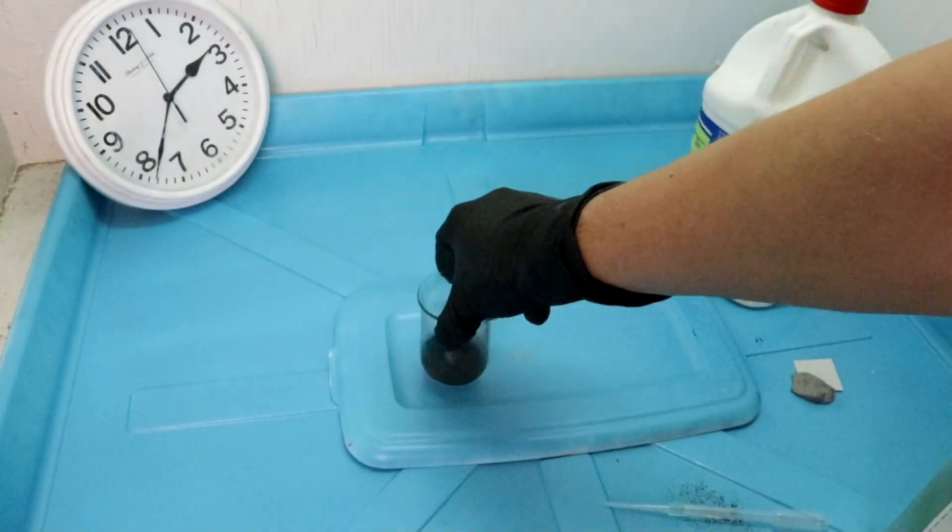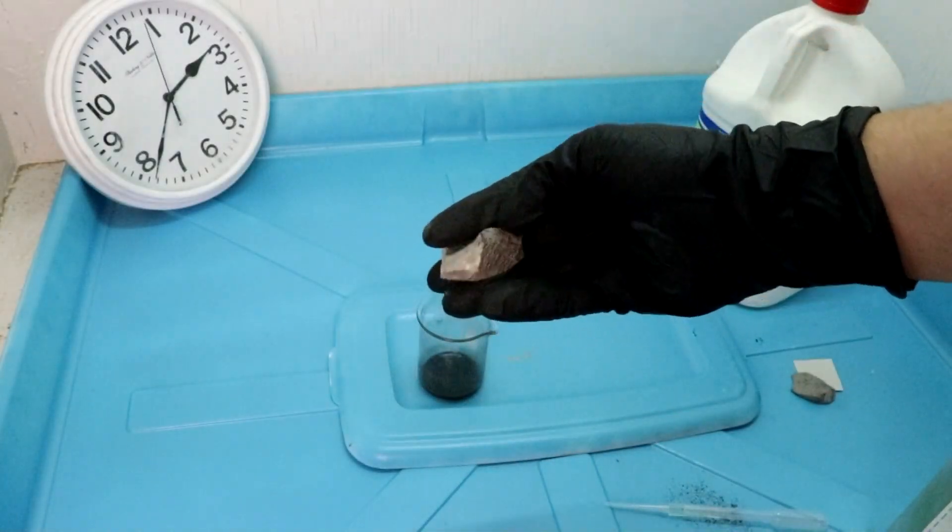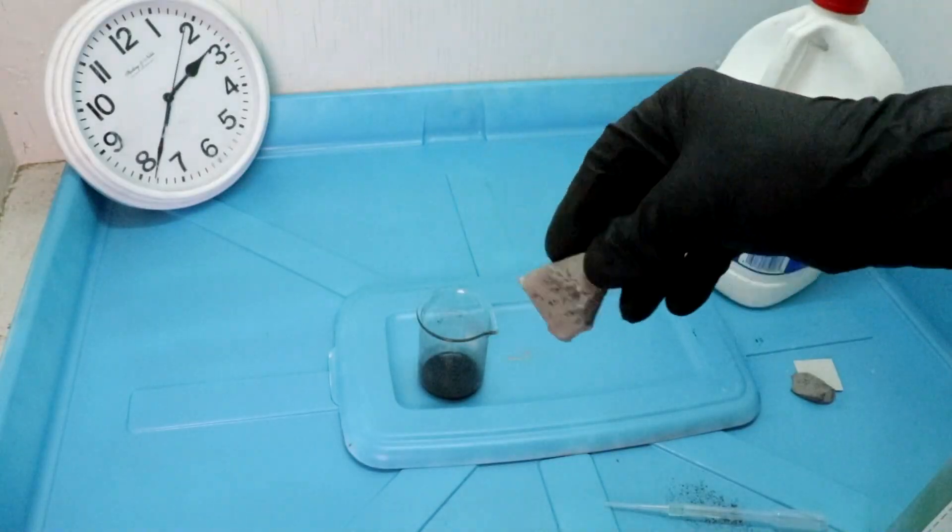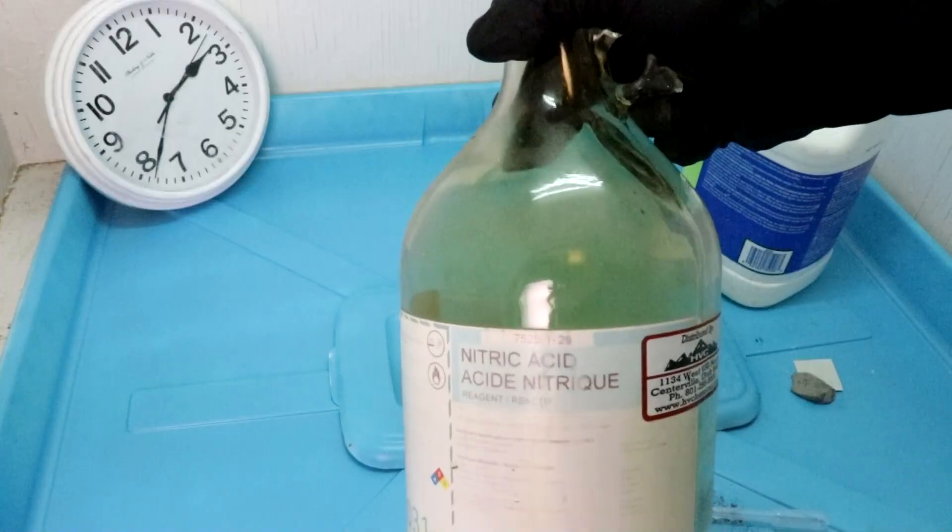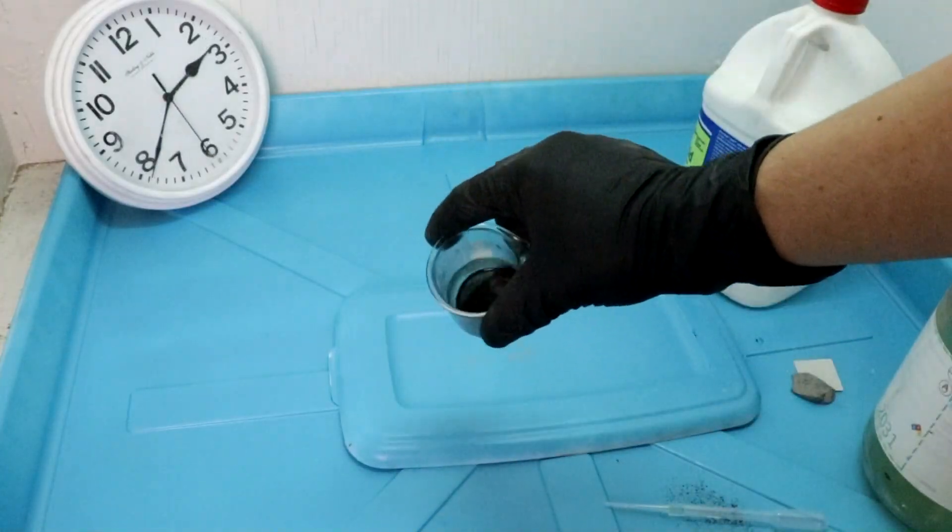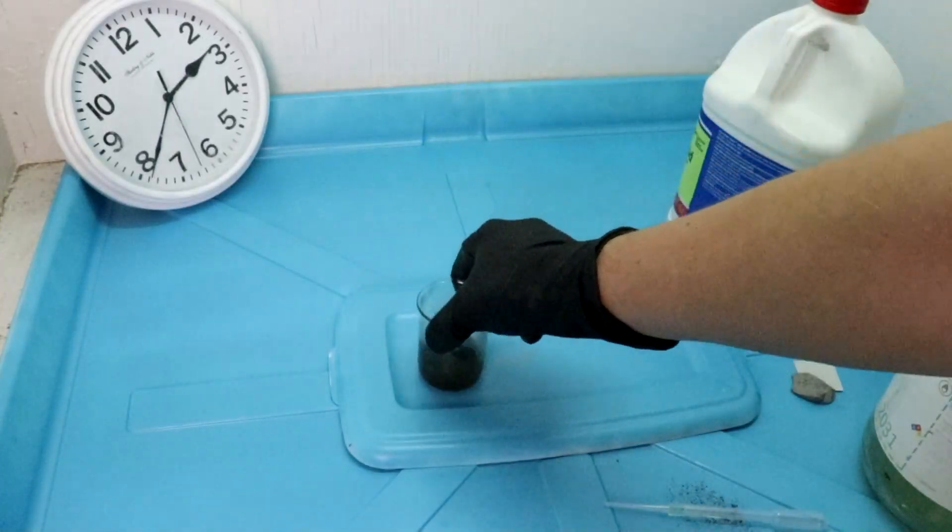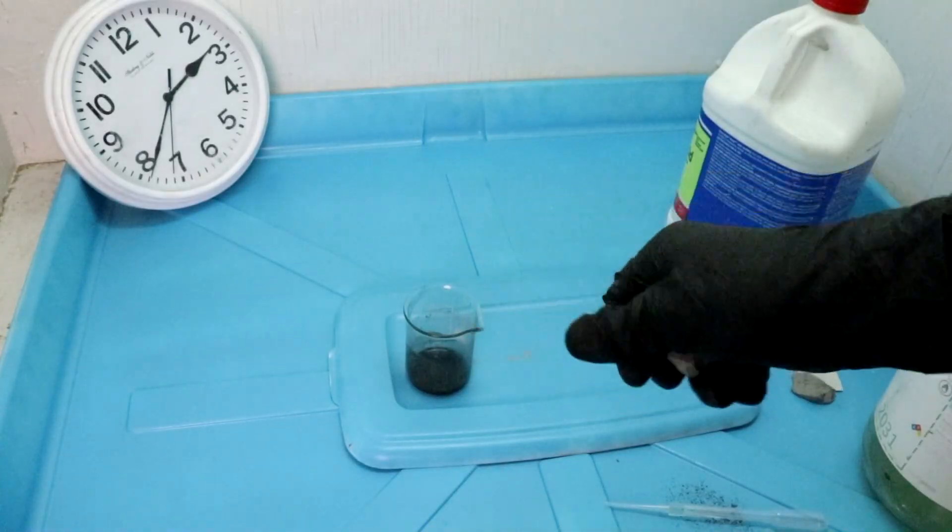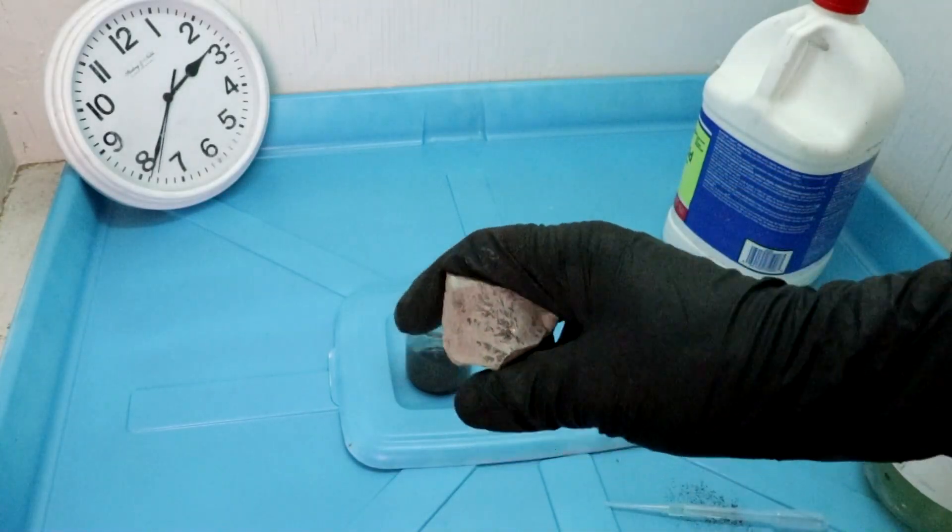The reason that the gold dissolved is that the manganese dioxide in the pyrolusite here is a strong oxidizer in itself, and so it actually acts as a replacement for the nitric acid. The manganese causes the chloride ions to be converted into elemental chlorine, which when combined with hydrochloric acid dissolves gold.